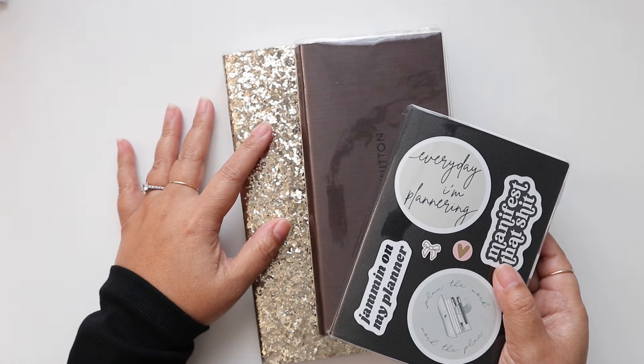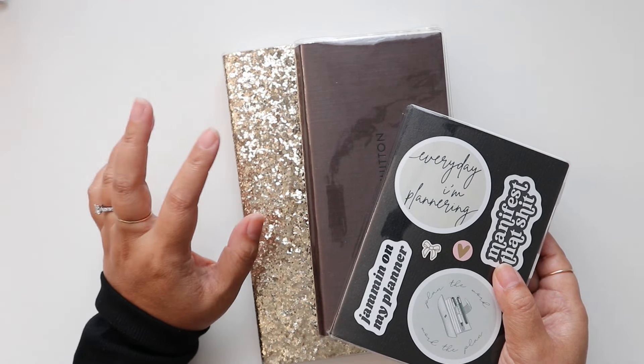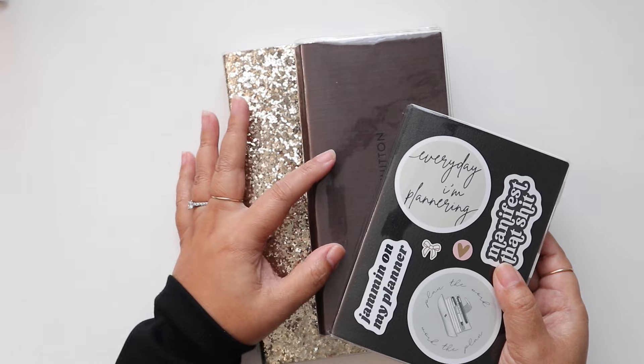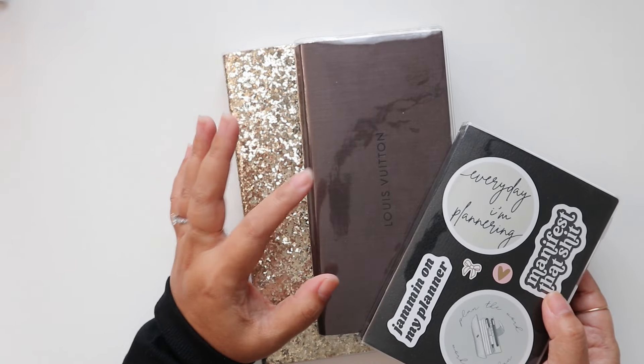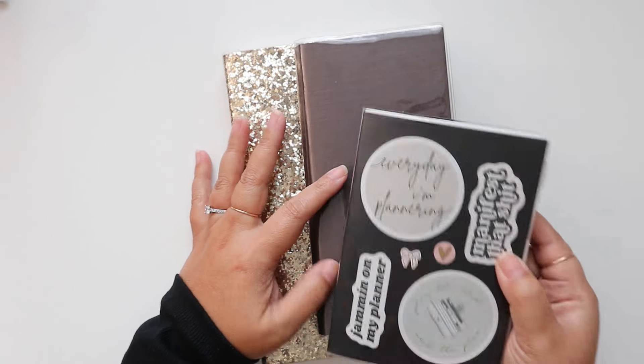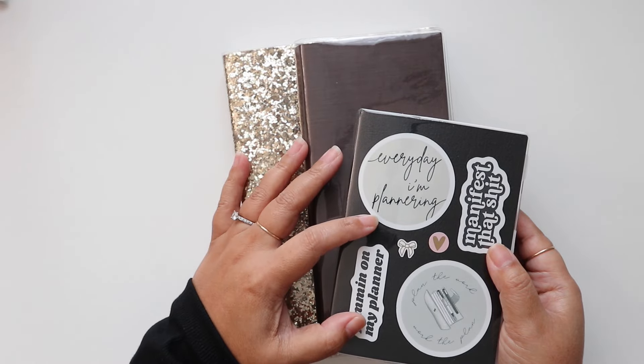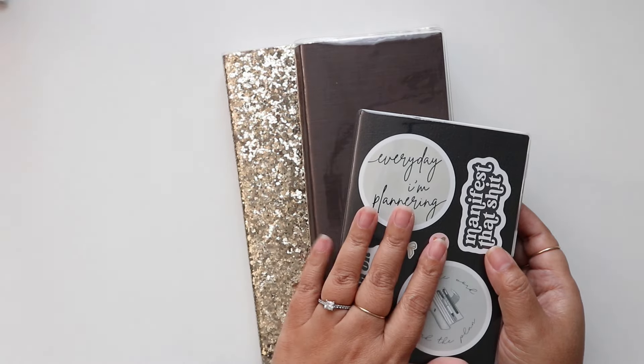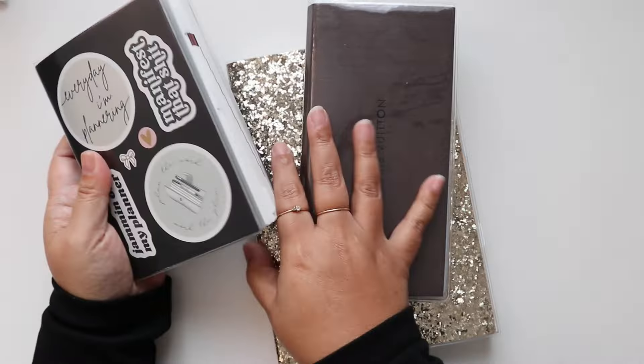This one is the Hobonichi Cousin which is my design slash work planner. This is the Hobonichi Weeks which is my wellness planner and this is my Hobonichi A6 which is my memory keeping planner. So I'll just start at the top then.